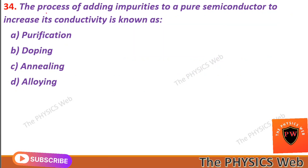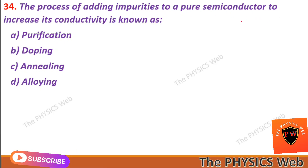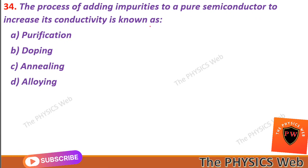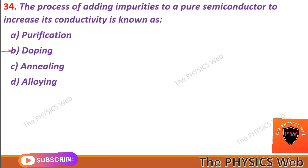Next, question thirty-four: the process of adding impurities to a pure semiconductor to increase its conductivity is known as doping. So B is your correct option.